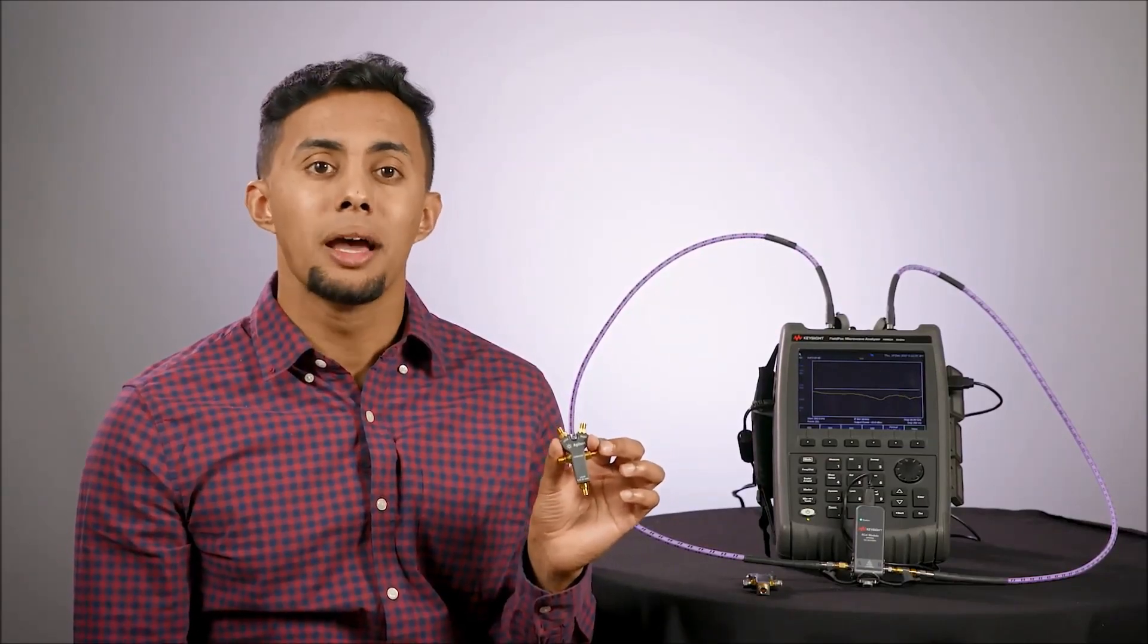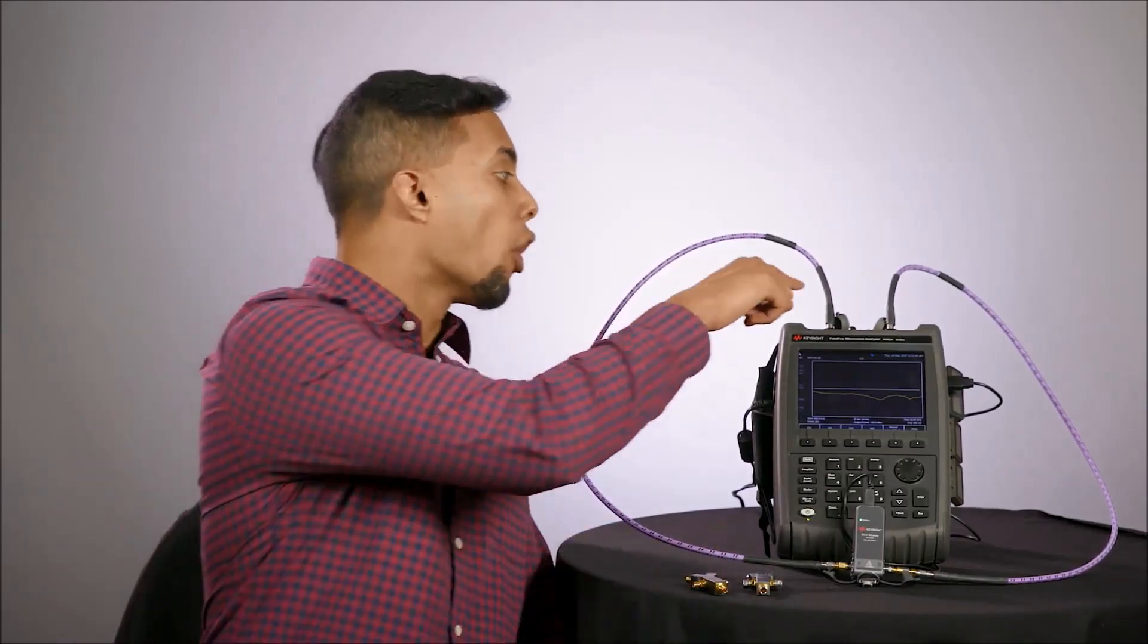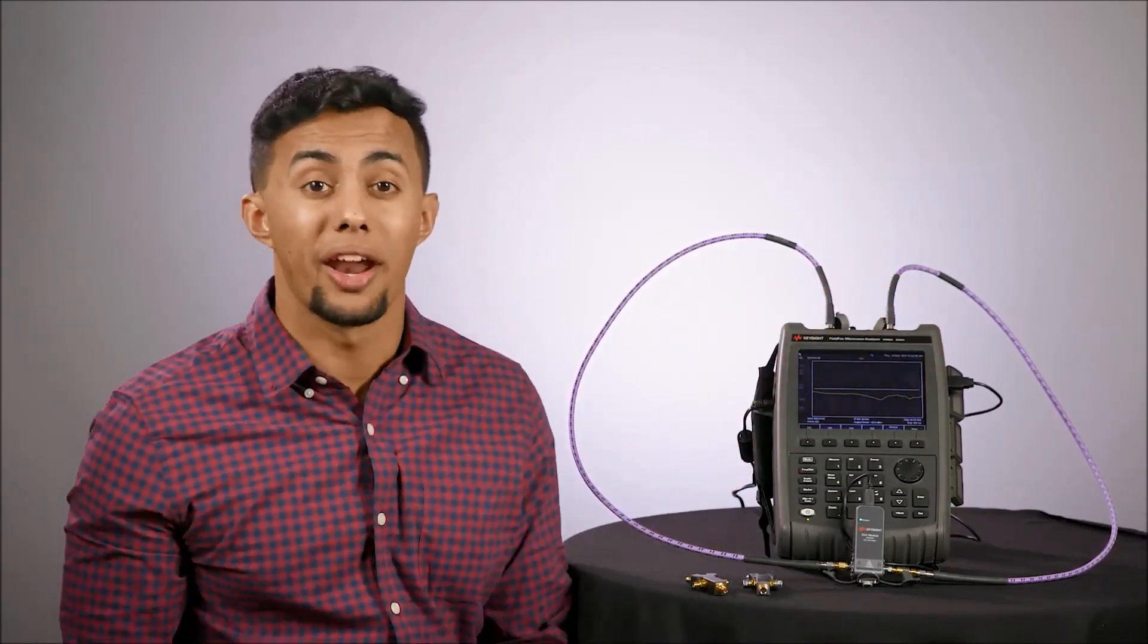Full two port calibration process requires seven connections: open, load, and short at port one and port two, and a through connection between ports one and two, which means connecting and disconnecting seven times. You get the point. This takes a lot of time.